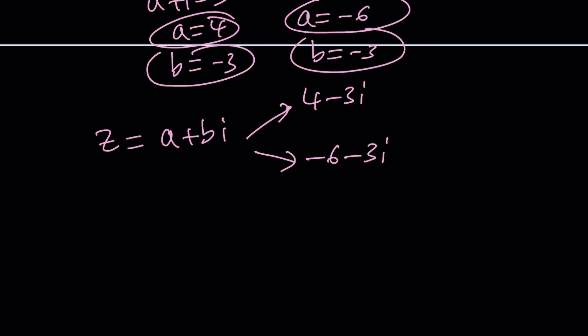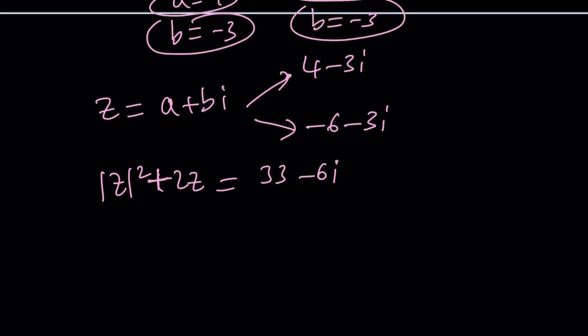By the way, there's a good way to make sure we did it right: substitute or check our work. I know people don't like it, they hate it—like "I did it correctly, whatever." Sometimes you find mistakes. If you have time, do it. Absolute value of z here is 5, right? And that would give us 5 squared, which is going to be 25. And then 2z is going to be 8 minus 6i, and that will actually give us this number.